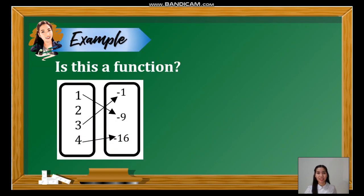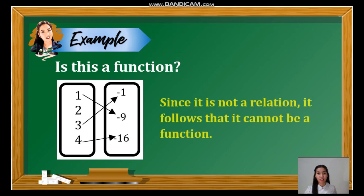How about this example? Is this a function? As you can see, two in the domain is not paired with any value in the range. Note that in a relation, every x value must have some kind of correspondence or partner with the range, for it to be considered as a relation at least. Since this is not a relation, then it follows it cannot be a function.